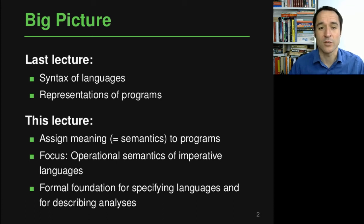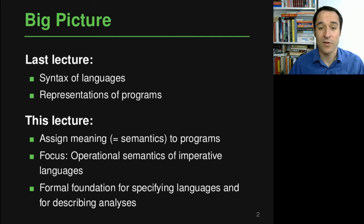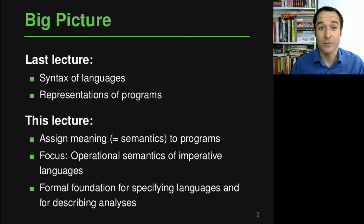This meaning, or semantics, can be defined, and we'll use operational semantics as a way to define the meaning of a programming language. All of this will be done in the context of imperative languages — we will not look at functional languages here. Just to warn you: this lecture will probably be the most theoretical of the course. If you don't like it that much, stay tuned because things will get more applied and practical after this lecture on operational semantics.